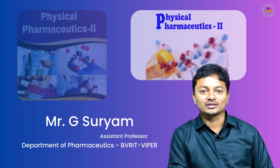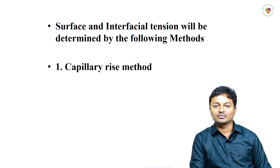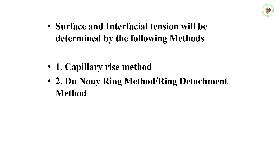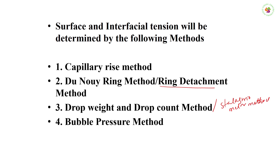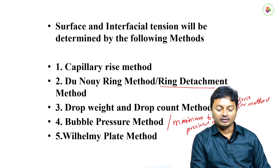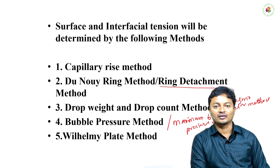Today we are here to discuss the measurements of surface and interfacial tension. The surface and interfacial tensions will be determined by different methods. Those methods are: capillary rise method, Du Noüy ring method — also known as detachment method — drop weight and drop count method, maximum bubble pressure method, and Wilhelmi plate method. These are the different methods used to determine surface and interfacial tension.